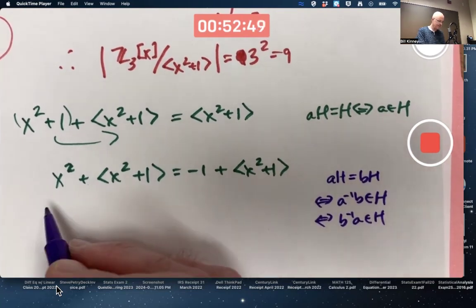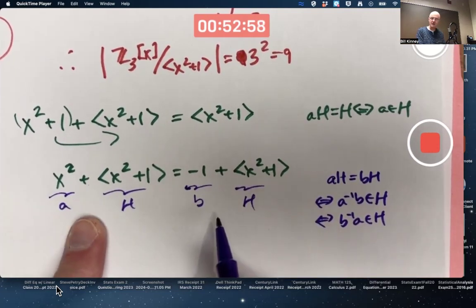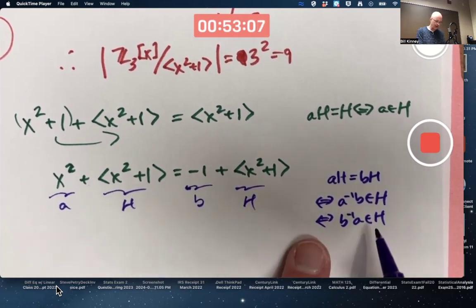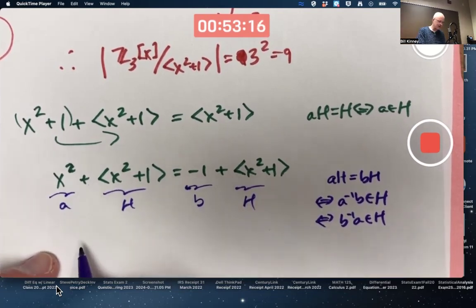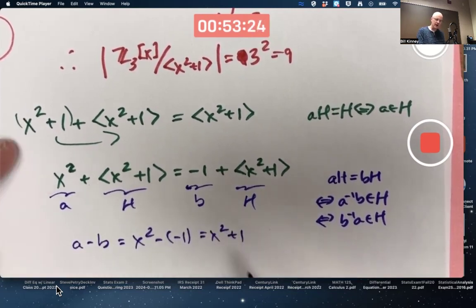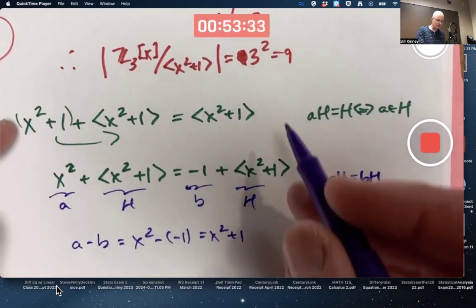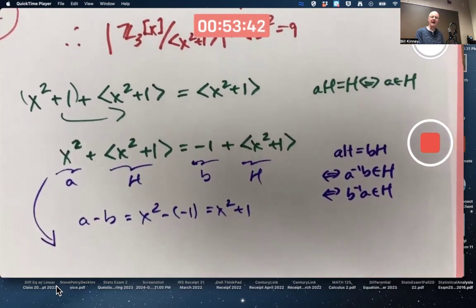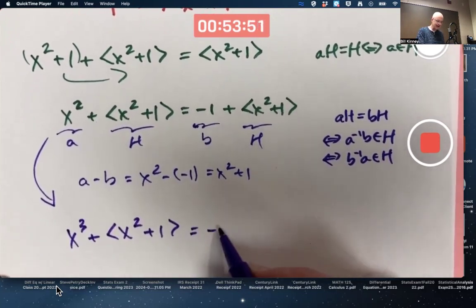You remember this property? a plus h equals b plus h if and only if a inverse b is in h, which is also true if and only if b inverse a is in h. That's what I'm really using here. The a is, say, this thing. The h is this. This is, say, this is the b. This is the h. Using additive notation here because we're talking a factor ring. We always use additive notation for our cosets. Why are these things equal? They'd be equal if one of these two is true. And yes, both of those are true because using additive notation, a minus b is x squared minus negative 1 is x squared plus 1. And as we saw up here, x squared plus 1 is definitely in the ideal.